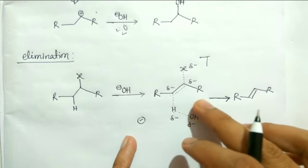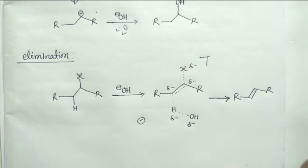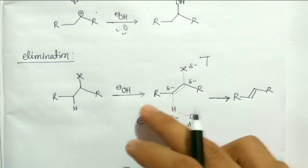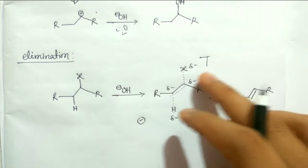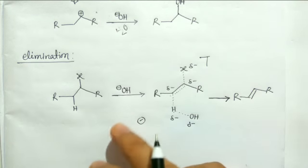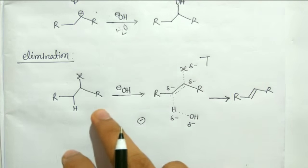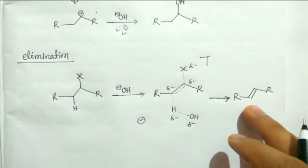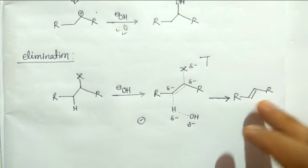Whereas the ethanol molecules are good at stabilizing the less charge density transition state and that's why it will stabilize the transition state for elimination reaction. And this is the reason when you do the reaction with alcoholic solvent you get the elimination product that is alkene.